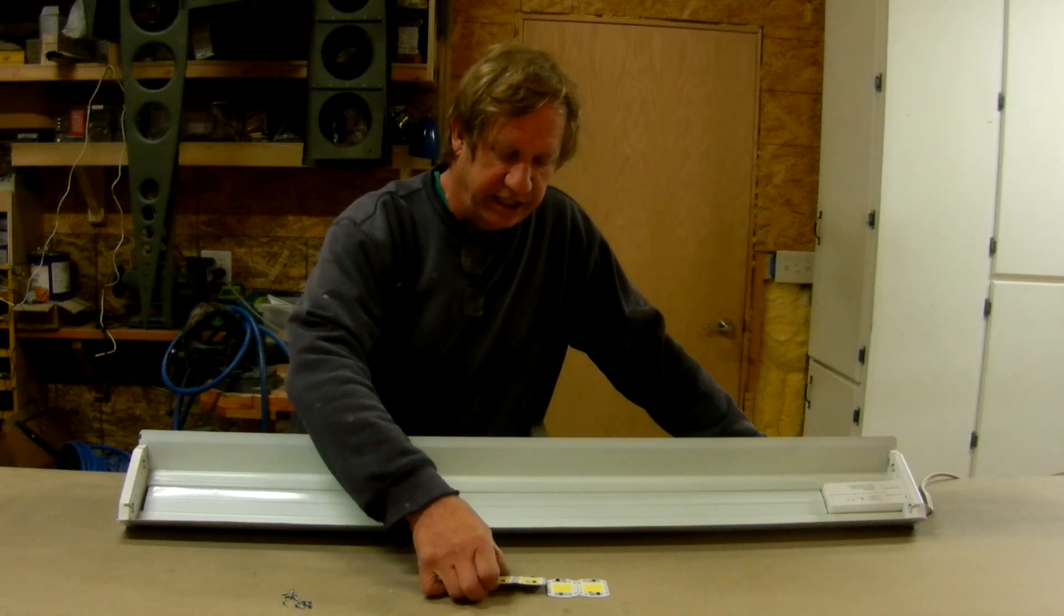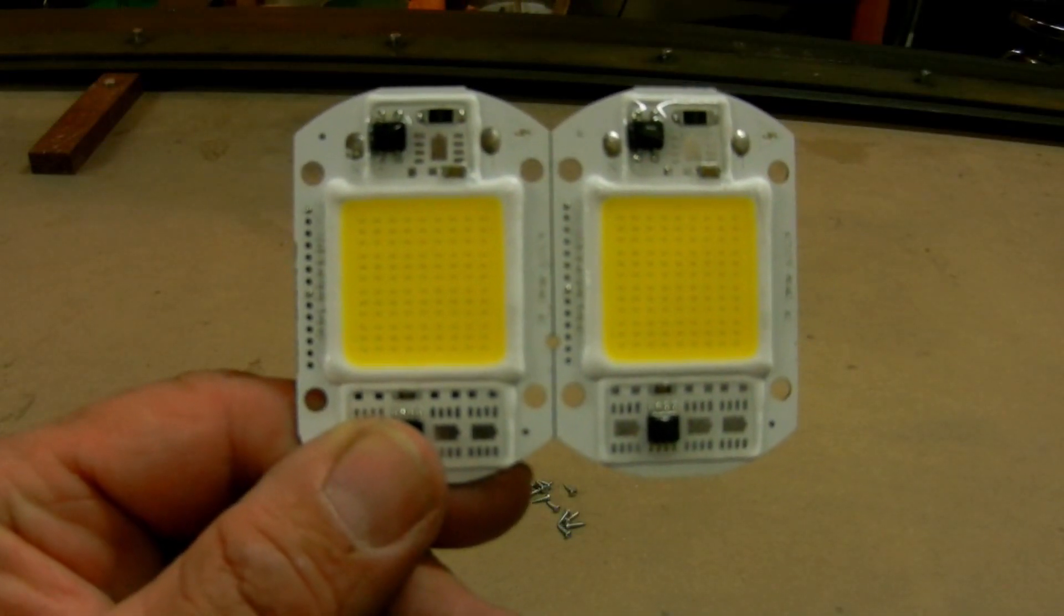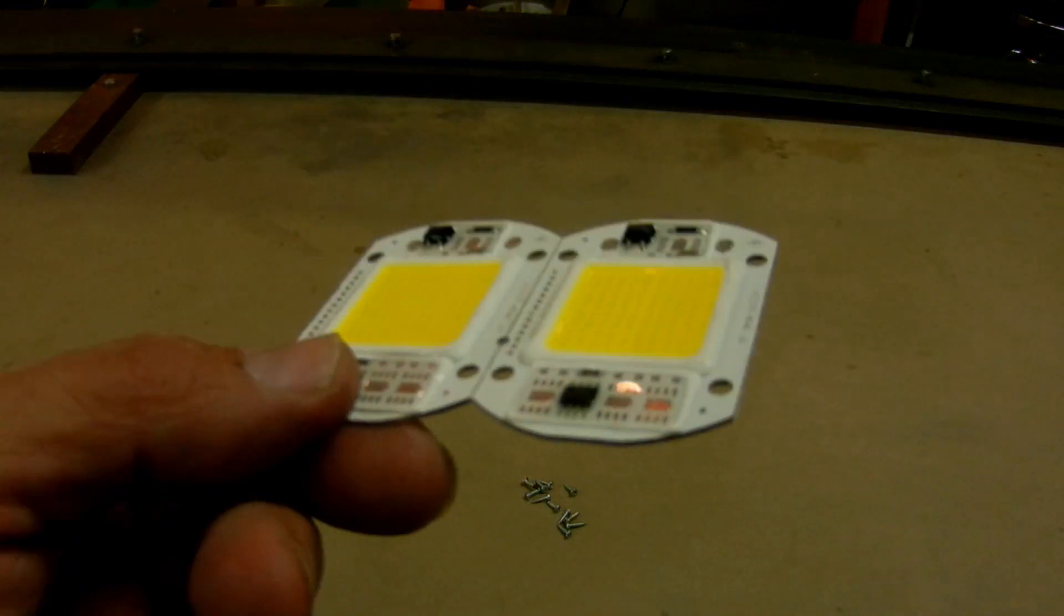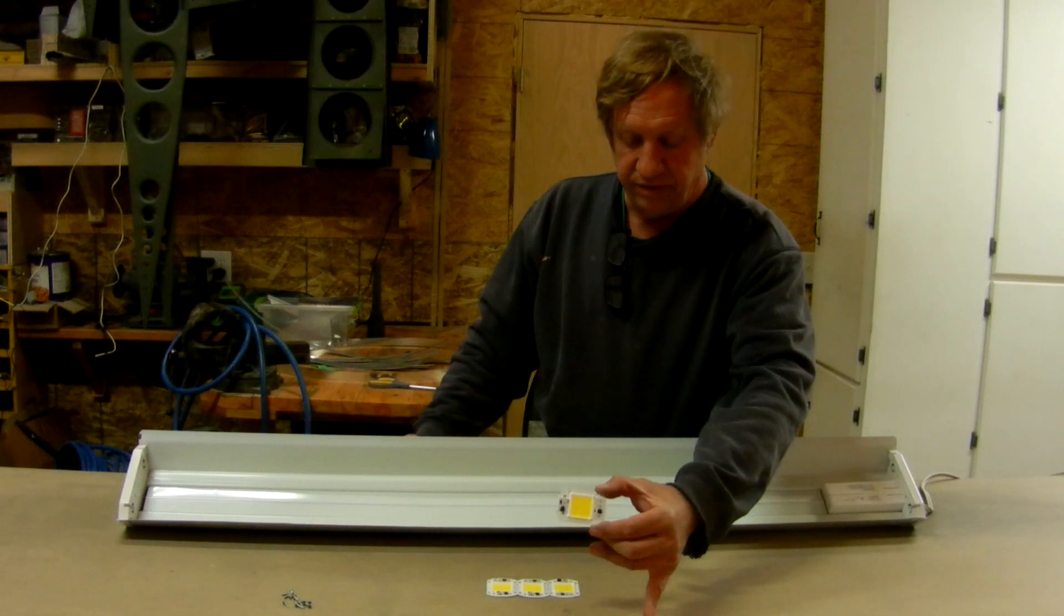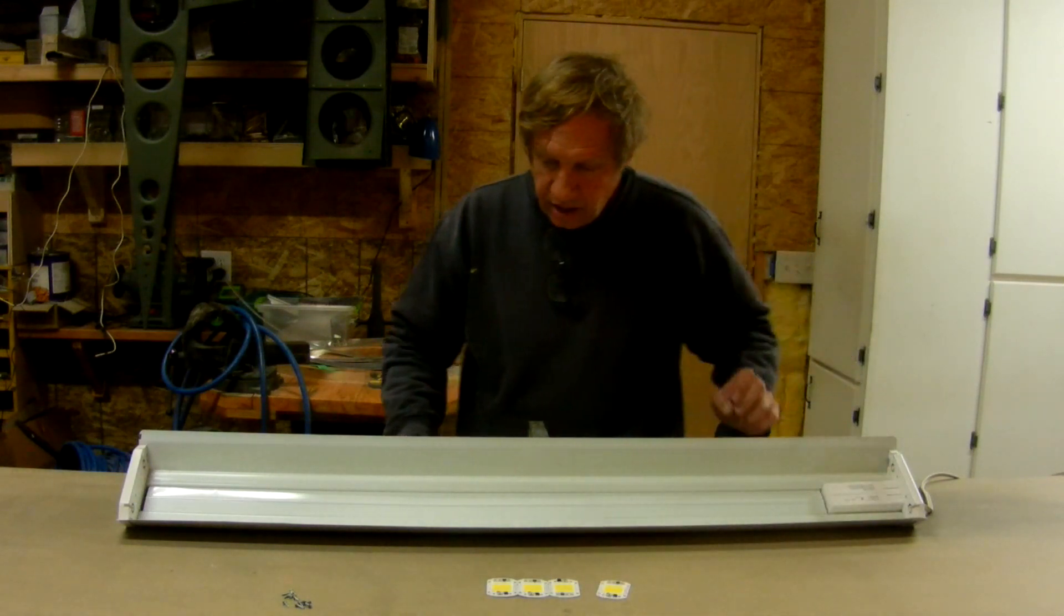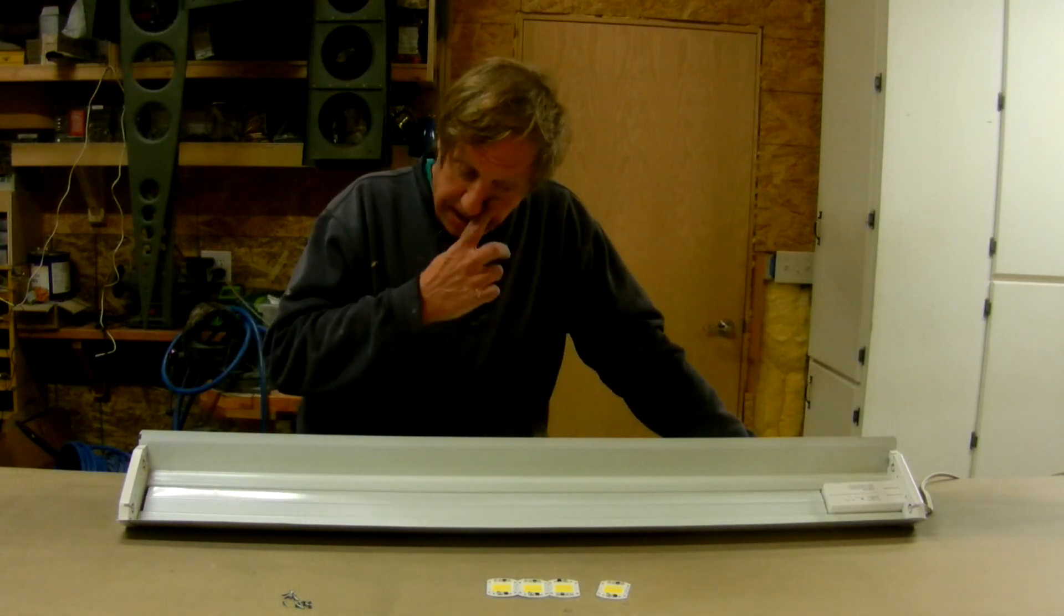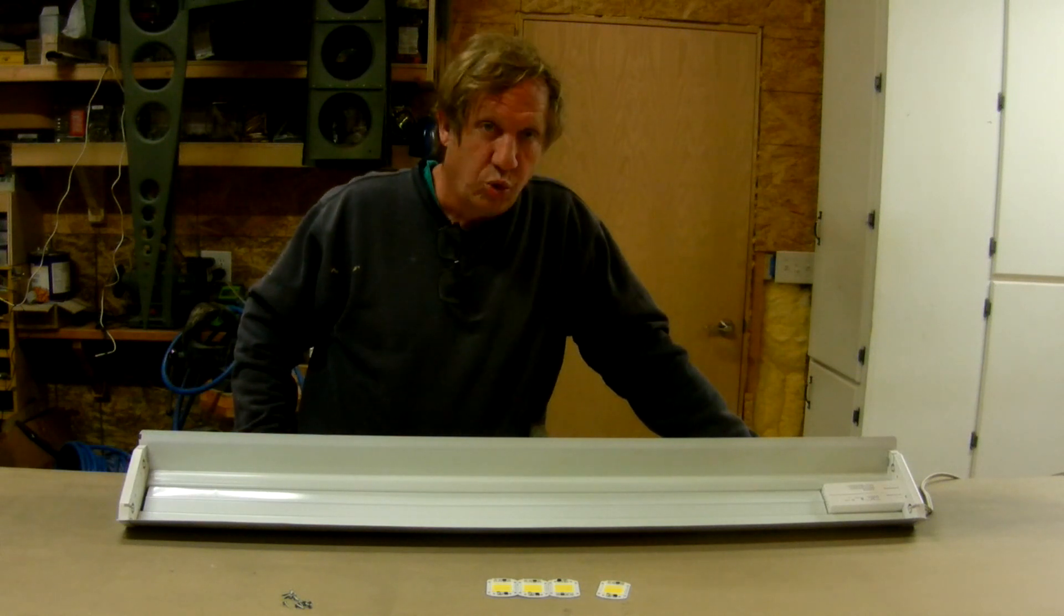But I'm going to put these LED COB modules in it. So these things are available. These are 30-watt units, and they're available for a whopping $1.50 from China. And I'm going to put four of them in there, making about a 120-watt fixture.